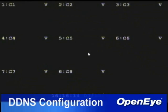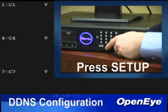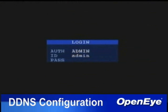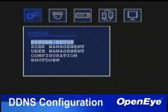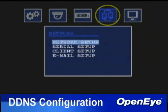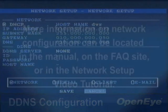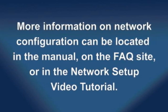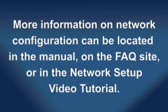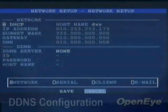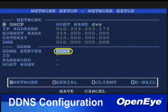To enable DDNS on E-Series DVRs, first press the Setup button on the front panel of the DVR or the remote control. Once in Setup, scroll over to Network and press Enter. In Network Setup, first configure the network settings as needed. More information on network configuration can be located in the manual, on the FAQ site, or in the Network Setup video tutorial.